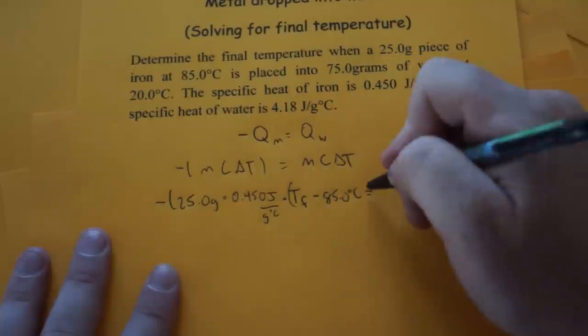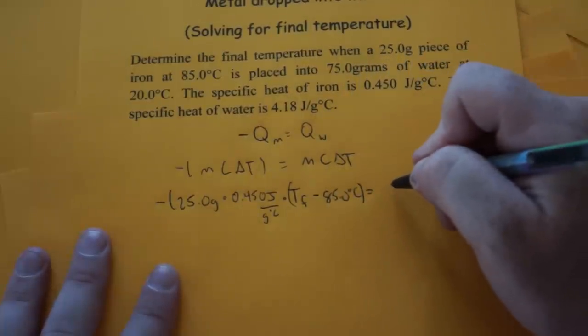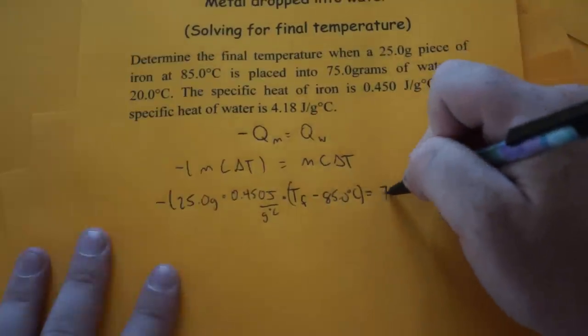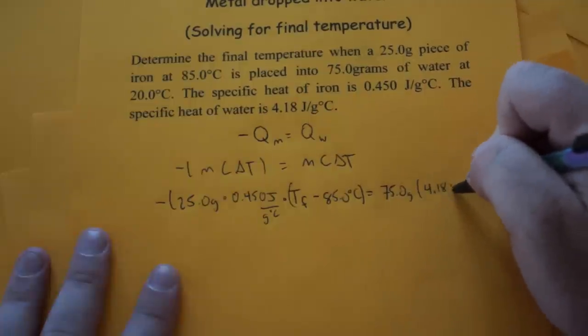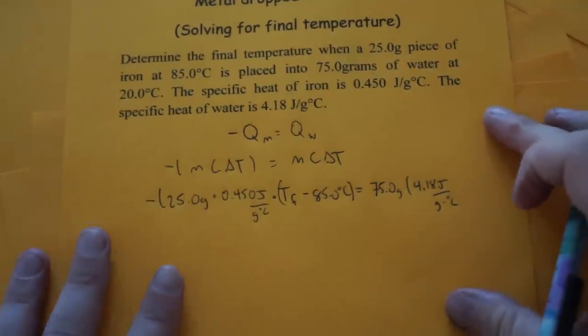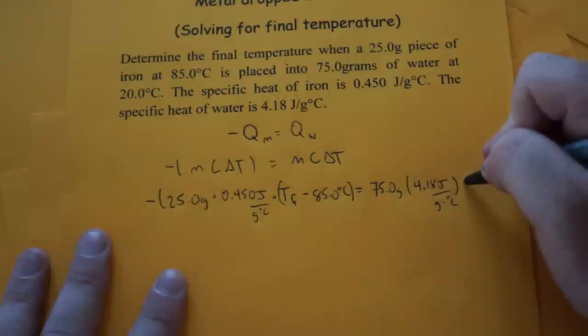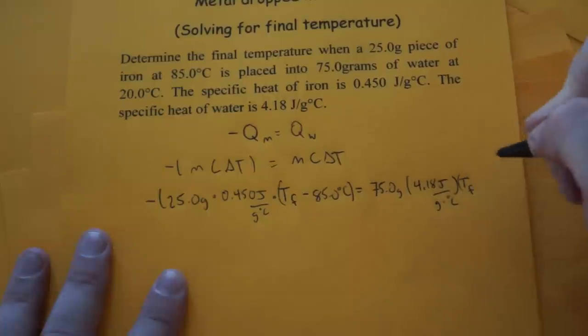And that's going to equal the mass of the water which is 75 grams. Specific heat of water, 4.18 joules per gram degree Celsius. And we don't know our Tf for the water, but we do know it started at 20 degrees Celsius.